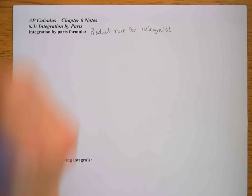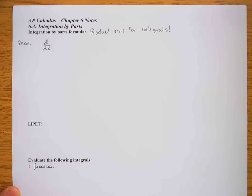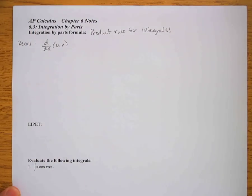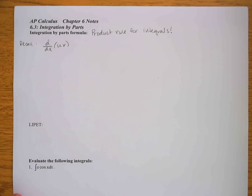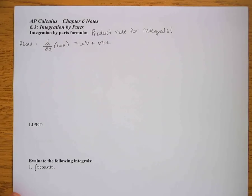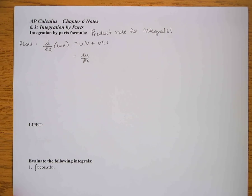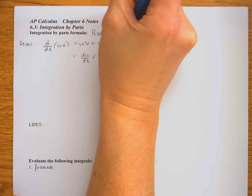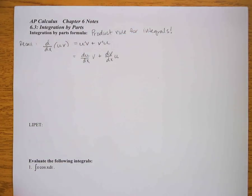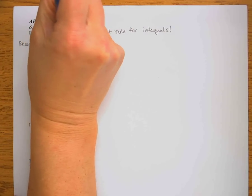We start by recalling the product rule for derivatives. If u is one function of x and v is another function of x, the derivative of their product is u′v + v′u. We can write that as (du/dx)·v + (dv/dx)·u — that's our product rule for derivatives.